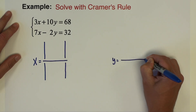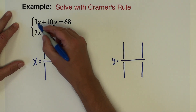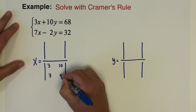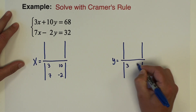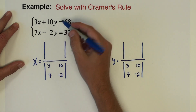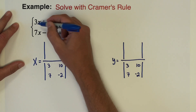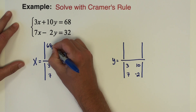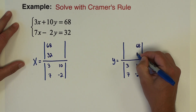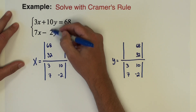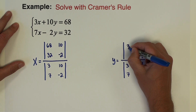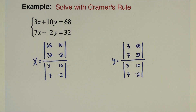I'll start by getting my x and y determinant fractions set up. The denominator of both fractions gets just the four coefficients: 3, 10, 7, and negative 2 — the same in both. In the numerator, 68 and 32 replace the x numbers when solving for x, and replace the y numbers when solving for y. The remaining coefficients just drop down: 10 and negative 2 stay for x's numerator; 3 and 7 stay for y's numerator.